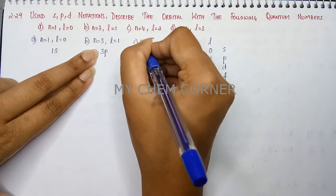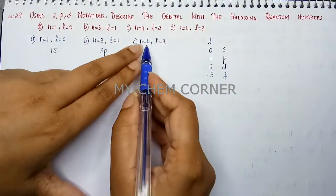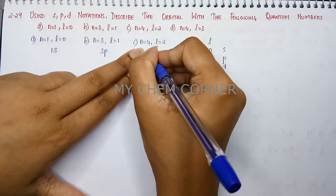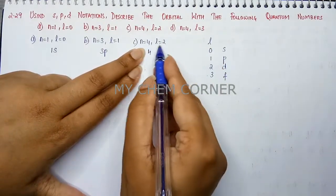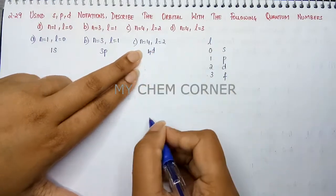In the third one, n is equal to 4 and l is equal to 2. So when n is equal to 4, I have principal quantum number 4, l is equal to 2 meaning d orbital. So this is going to be 4d.